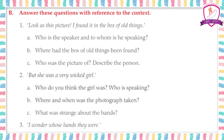So here we have the first reference to context. The sentence given is: 'Look at this picture, I found it in the box of old things.' The first question asks who is the speaker. The boy, or the author, is the speaker, and he is speaking to his grandmother. He ran to his grandmother, so the speaker is the boy and he is speaking to his grandmother.